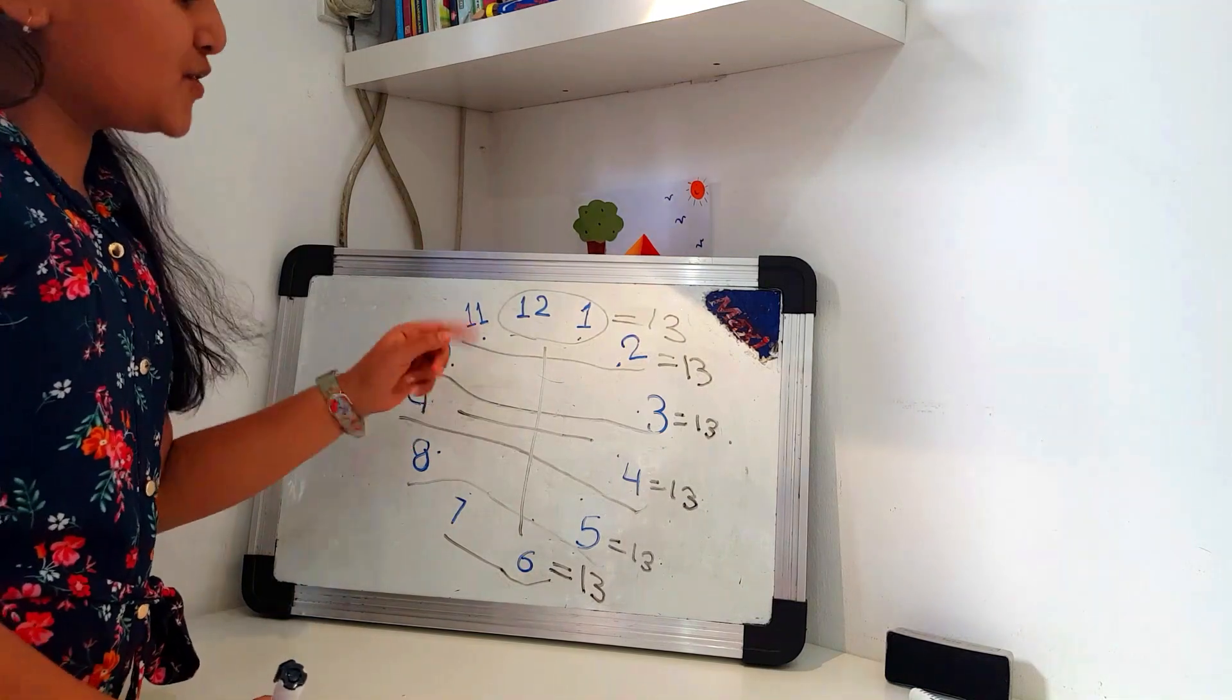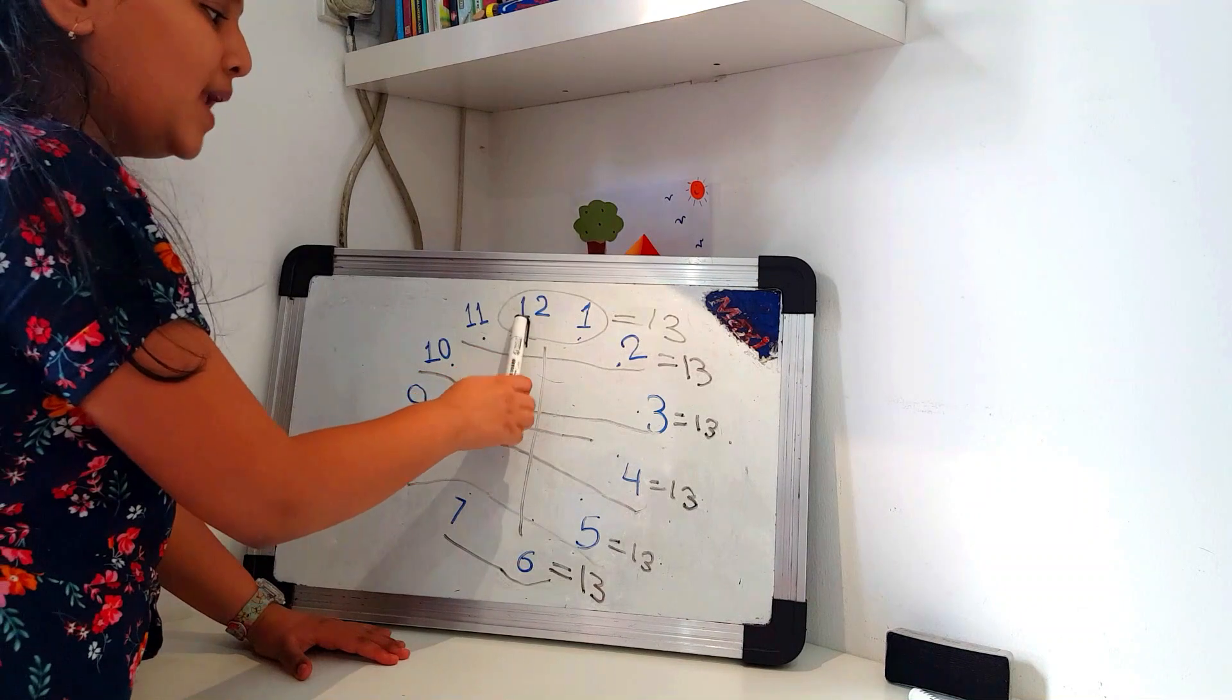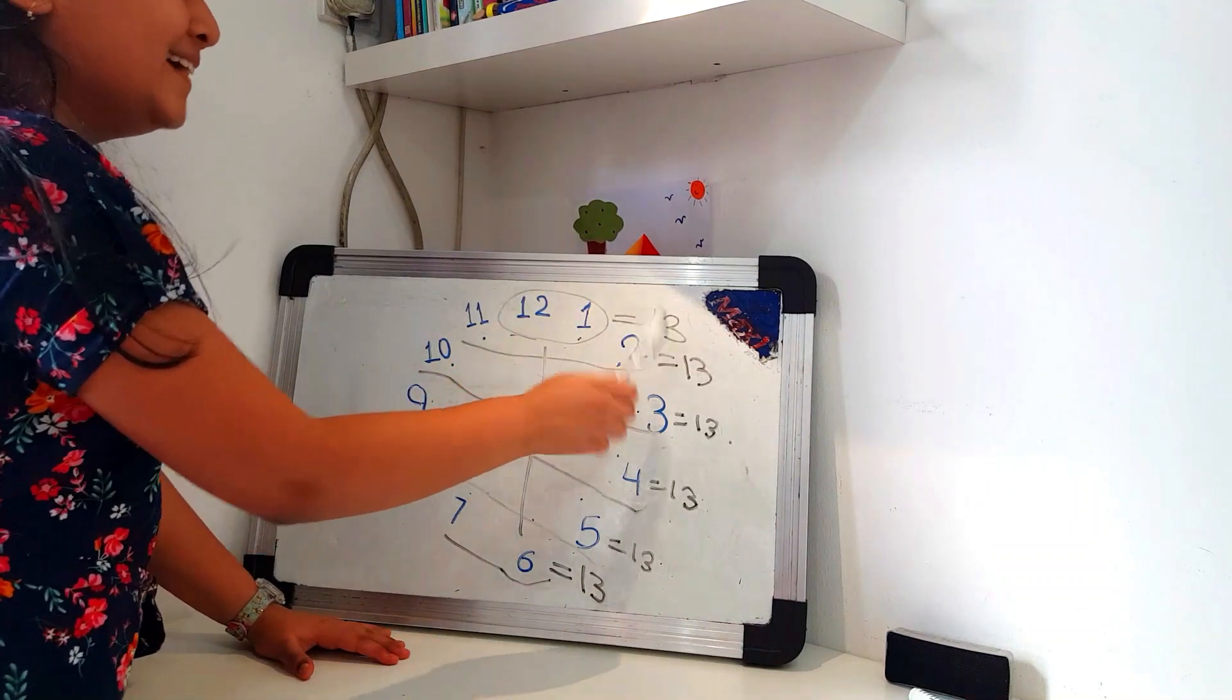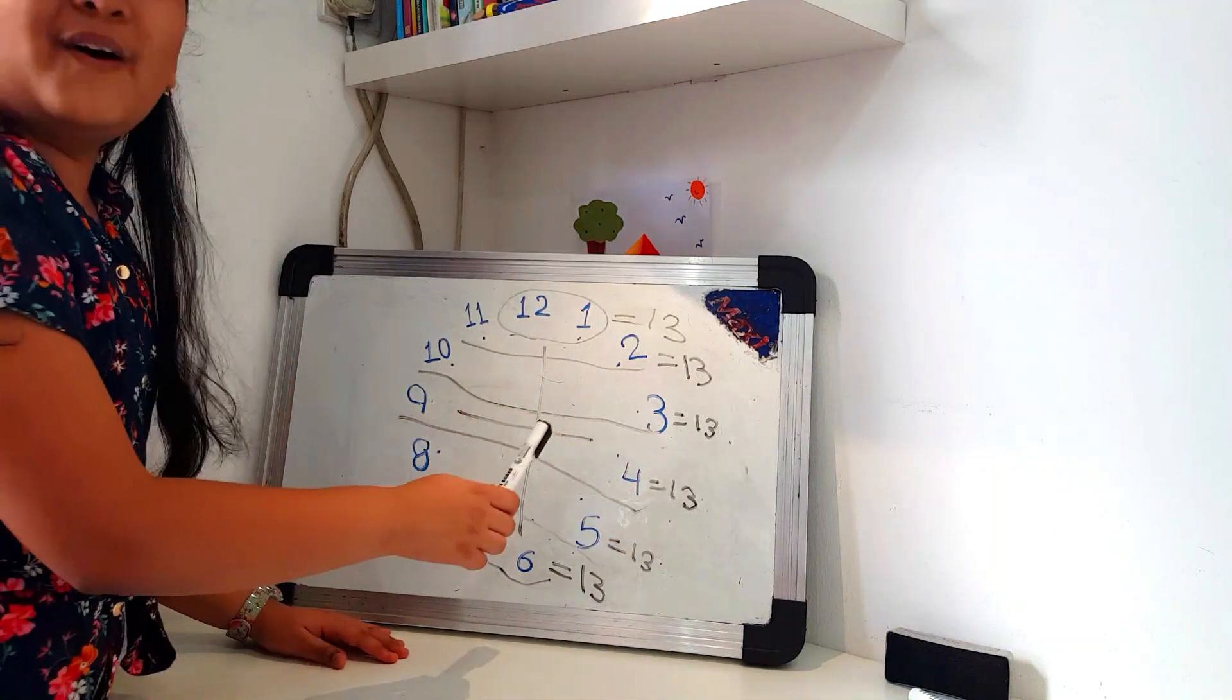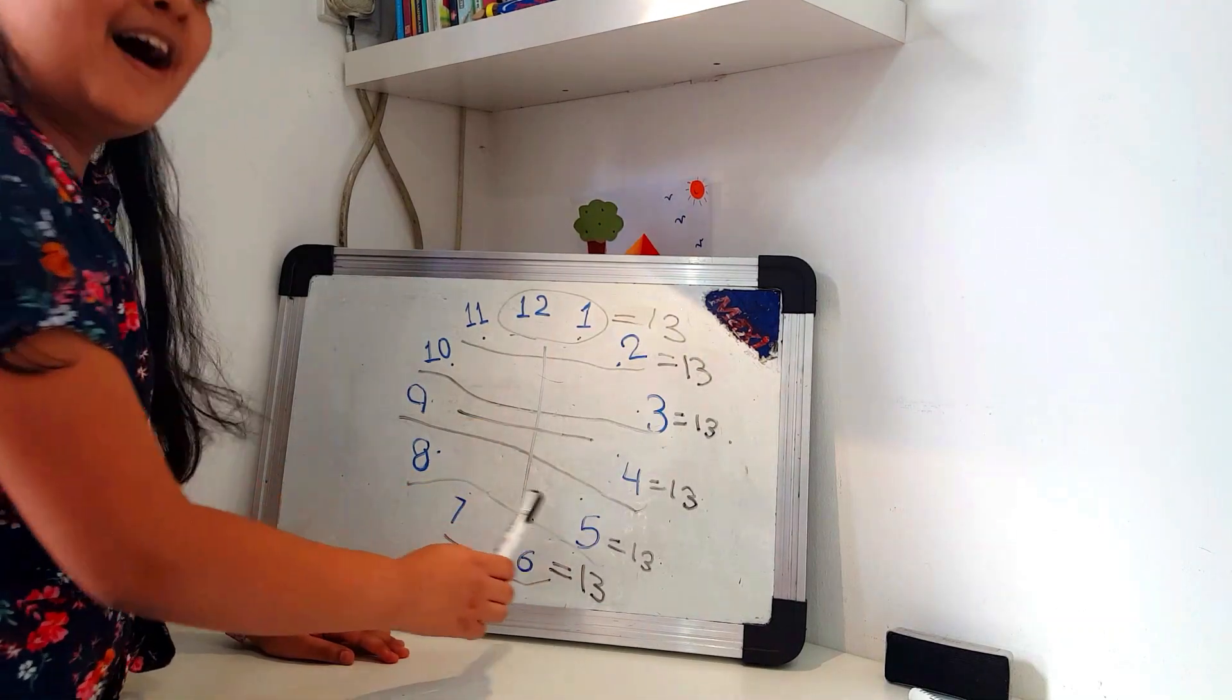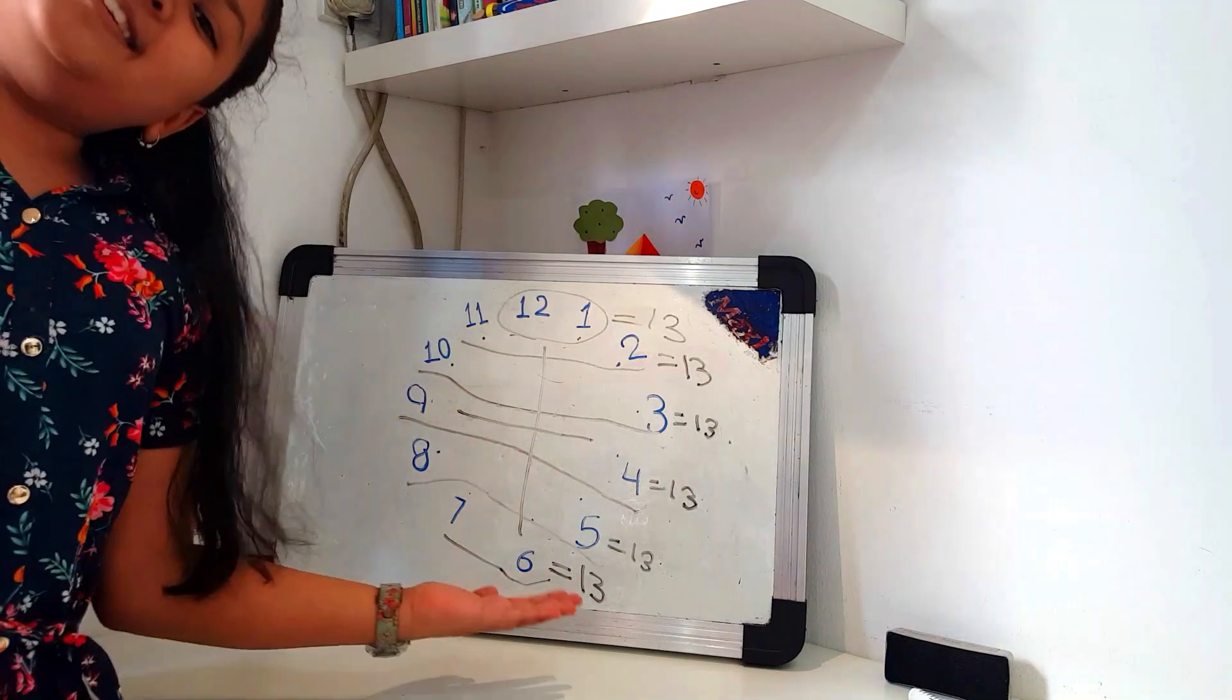Friends, so this was another pattern which was also of addition. So let's again do a recap. 12 plus 1 is 13. 11 plus 2 is 13. 10 plus 3 is 13. 9 plus 4? 13. And 8 plus 5? 13. 7 plus 6 also 13.